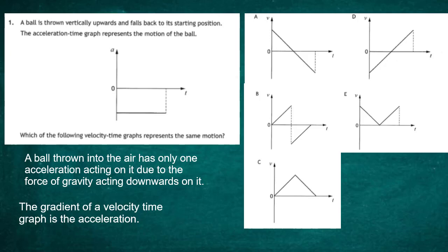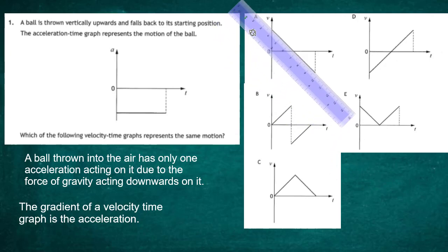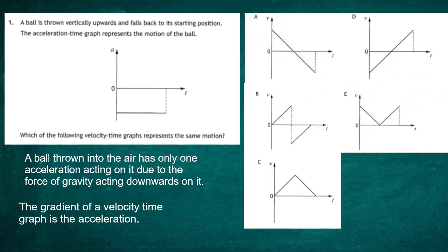Looking at Graph A, it appears to be the top contender. The velocity of the ball when it leaves the hand will be high; as it moves upward its velocity reduces to zero, then increases in the negative direction. Since only one acceleration is taking place, there should be only one gradient — and Graph A has just one gradient. Graph A correctly tells the story of a ball thrown into the air. The answer for question one is Graph A.